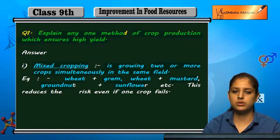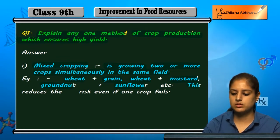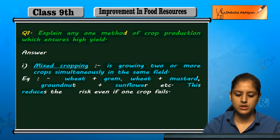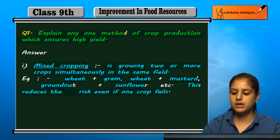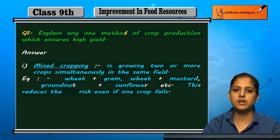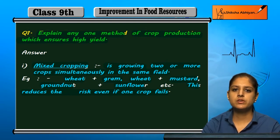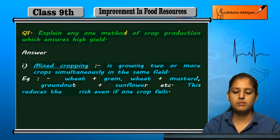Mixed cropping reduces risk — even if one crop fails, we still have the other crop. So the risk factor is reduced with mixed cropping.